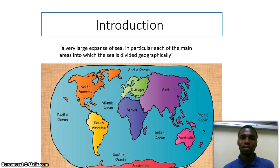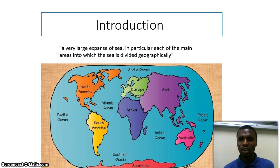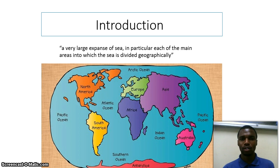To re-emphasize: an ocean is a very large expanse of sea, in particular, each of the main areas into which the sea is divided geographically. As you can see on this slide, you have the Pacific Ocean, the Indian Ocean, the Atlantic Ocean, the Southern Ocean — these are the geographically divided areas of the oceans, they are given names, and they are clear on this slide.